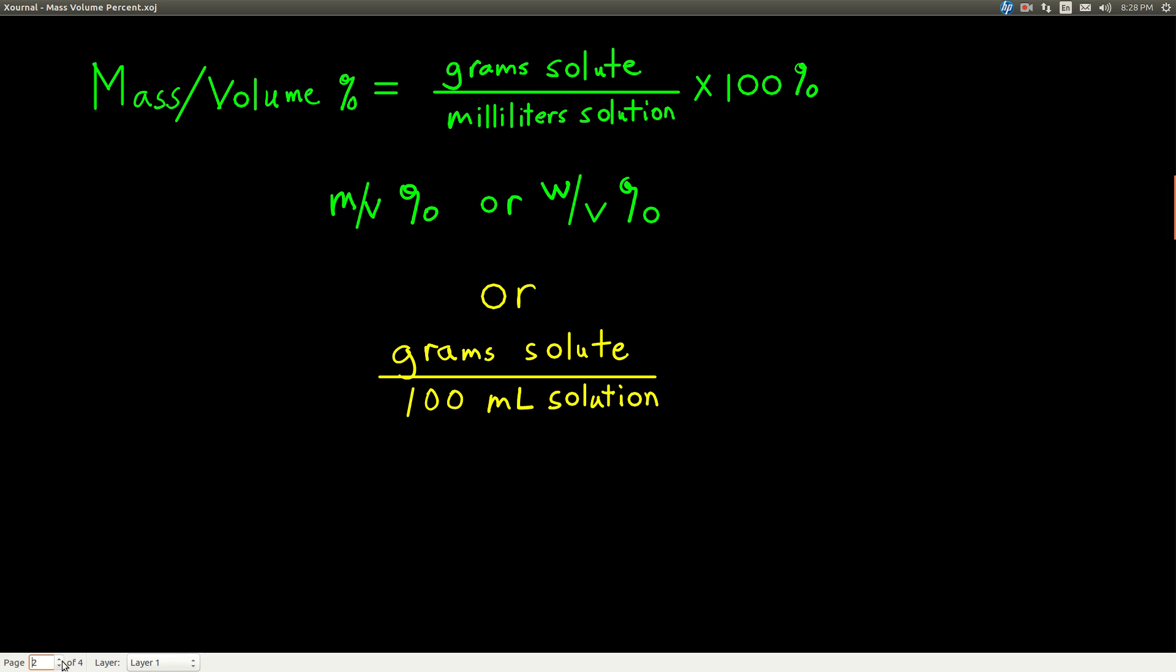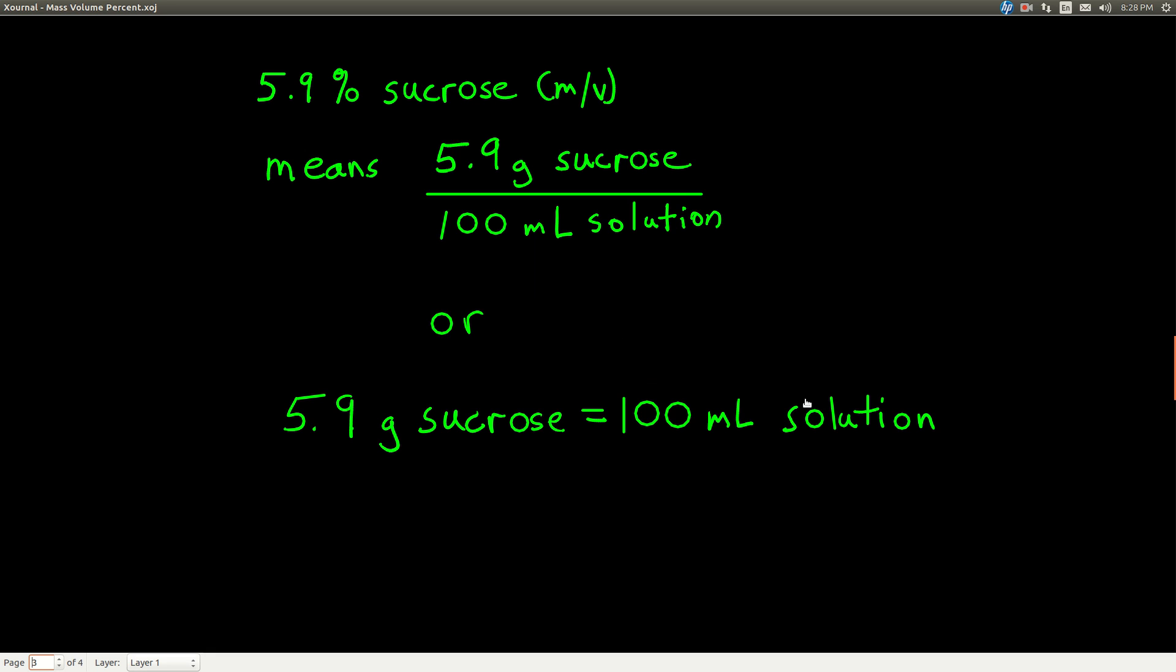You can also think about this as a conversion factor. So let's say we have a solution that's 5.9 percent sucrose mass volume. You'll see it written like that. What that means is that there's 5.9 grams of sucrose per or for every 100 milliliters of solution.